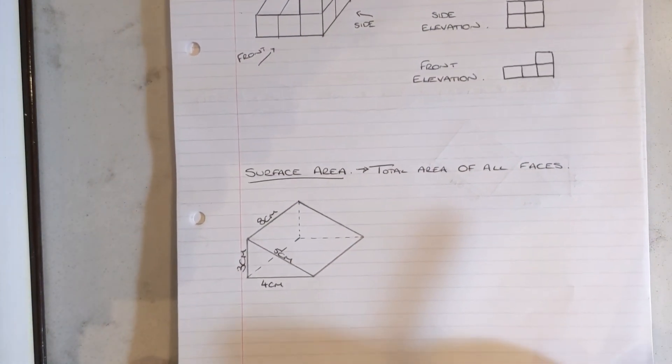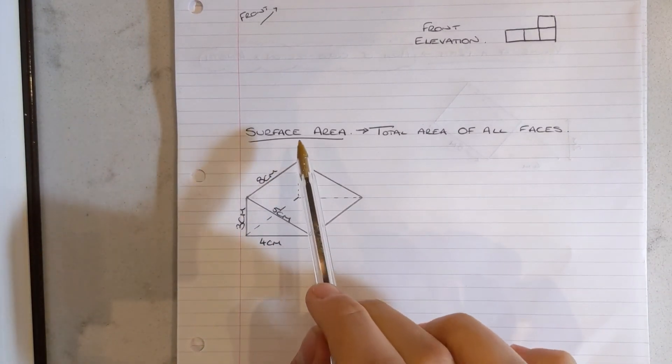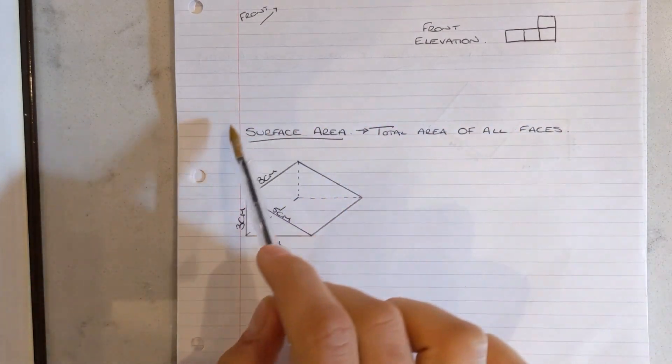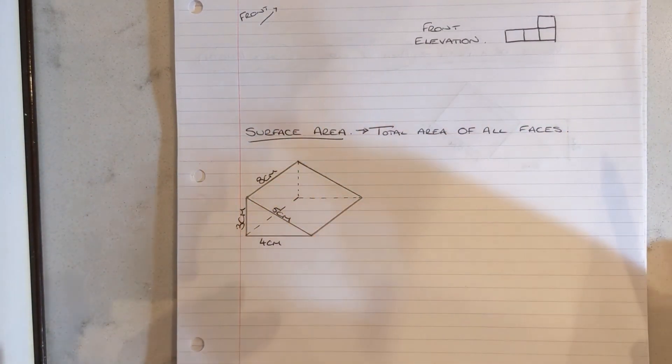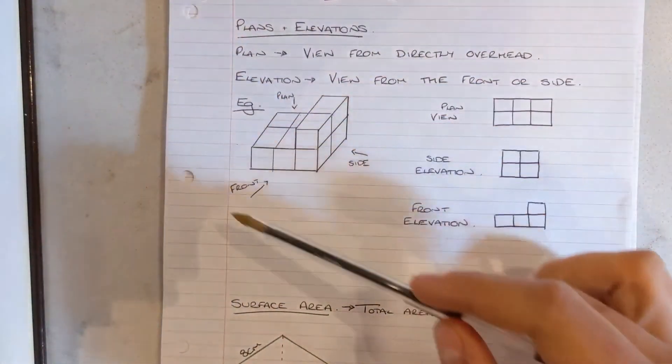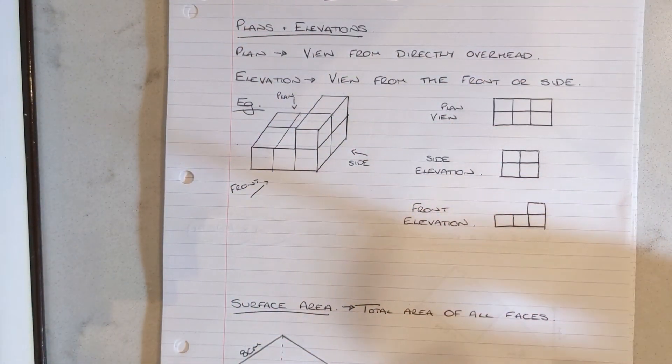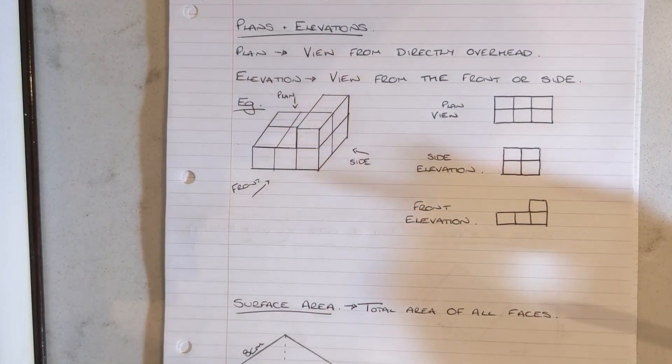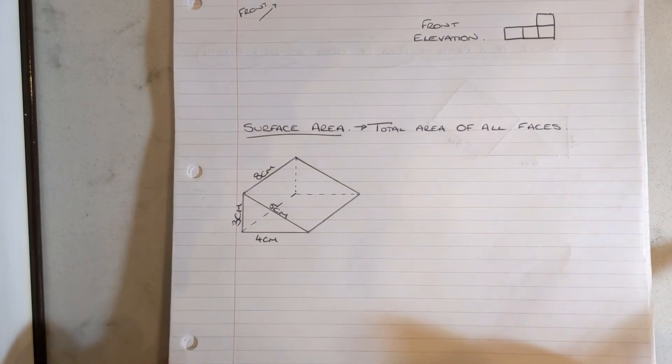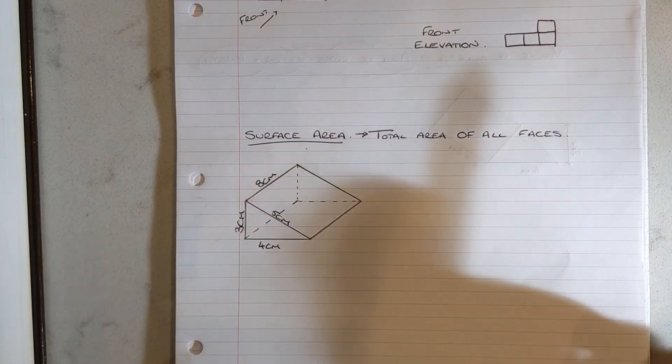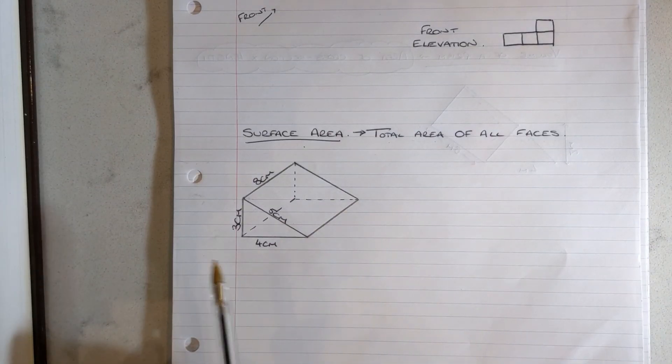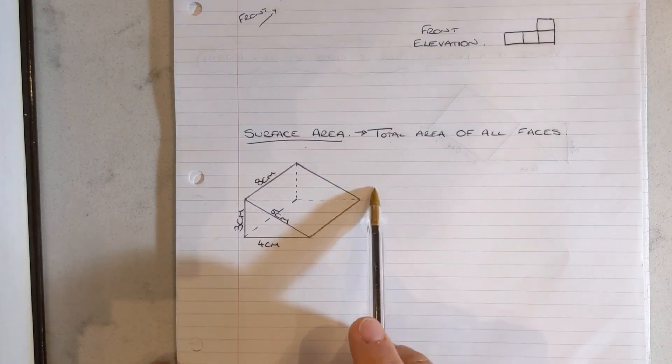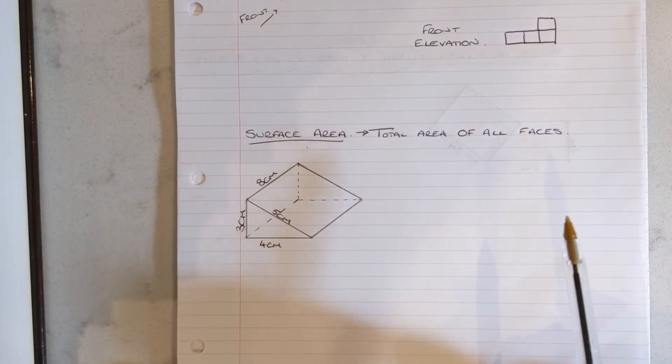So moving on to surface area now. Surface area is just the total area of all faces. This would be really key to get down into your notes, as is the stuff above. But all of that stuff above should be fairly straightforward and you should remember that from Year 7, 8, and 9. But if you need to get this stuff in your notes as well, please pause the video and go back and make sure it is. So surface area is the total area of all the faces. We have got this triangular prism here, this right-angled triangular prism, and we want to find the total surface area of this shape.